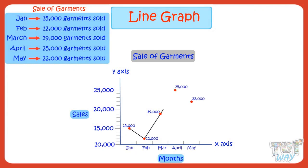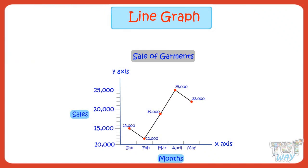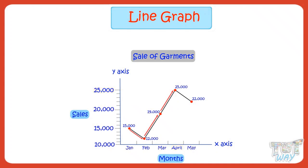Similarly, plot all the information, join the dots, and the line graph is ready. Now let's read the line graph. Sales in January is 15,000 garments, whereas sales in February reduced to 12,000 — which is 3,000 lesser than January. Then sales increased to 19,000 garments in March, and further increased to 25,000 garments in April — that is, the sales reached its peak point. And sales decreased by 3,000 and is 22,000 in May. So we can clearly see the trends using the peaks and dips shown by a line graph.